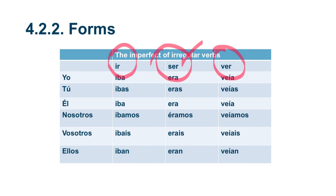For ser, another very irregular verb in the imperfect: yo era, tú eras, él era, nosotros éramos, vosotros erais, and ellos eran.